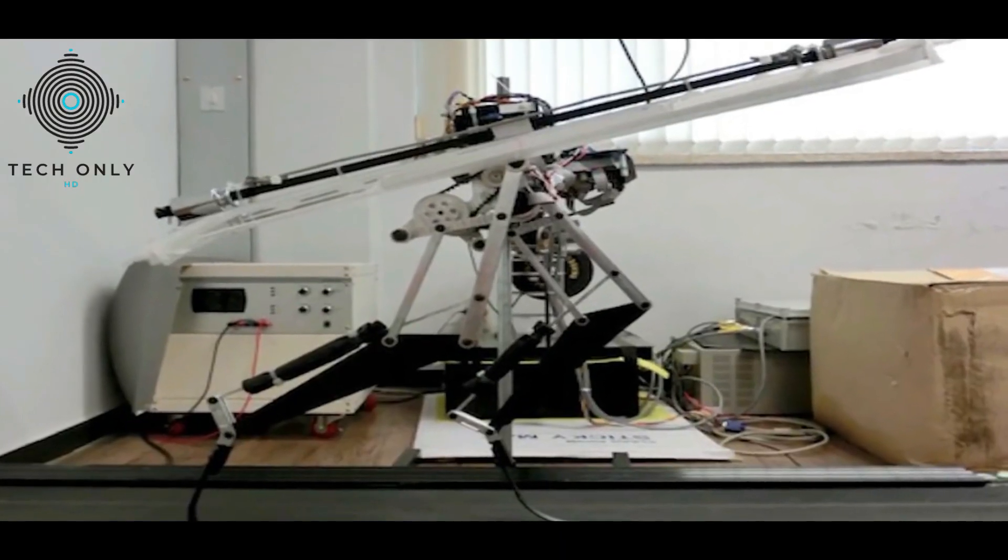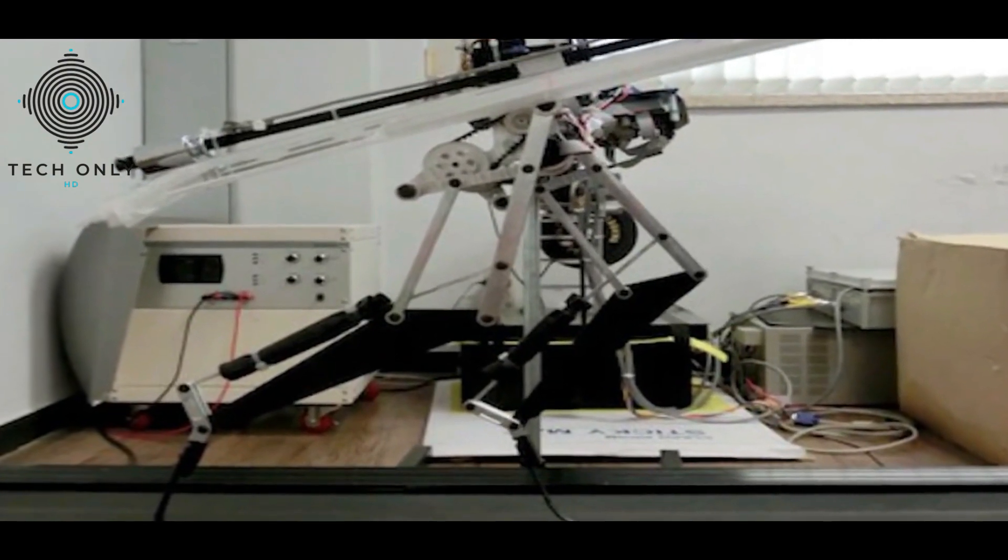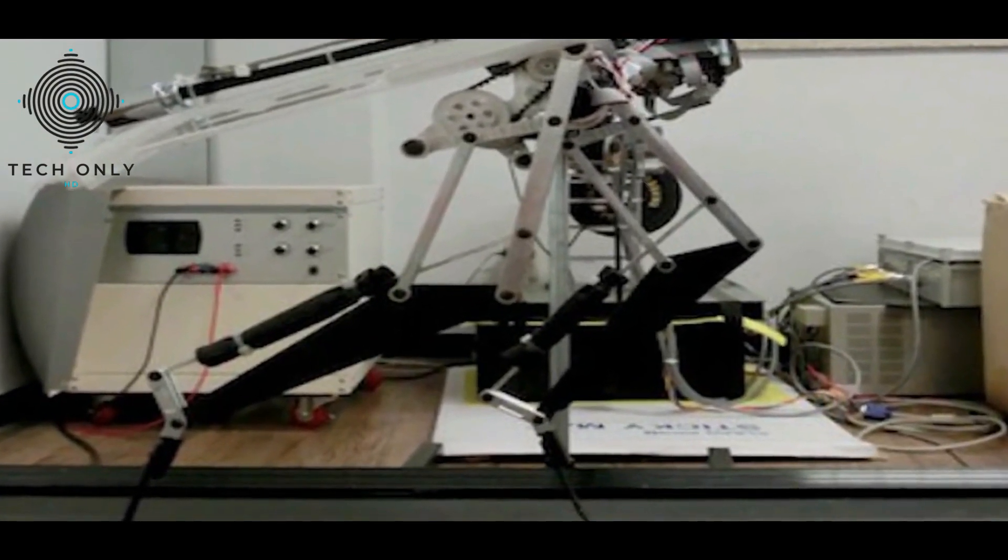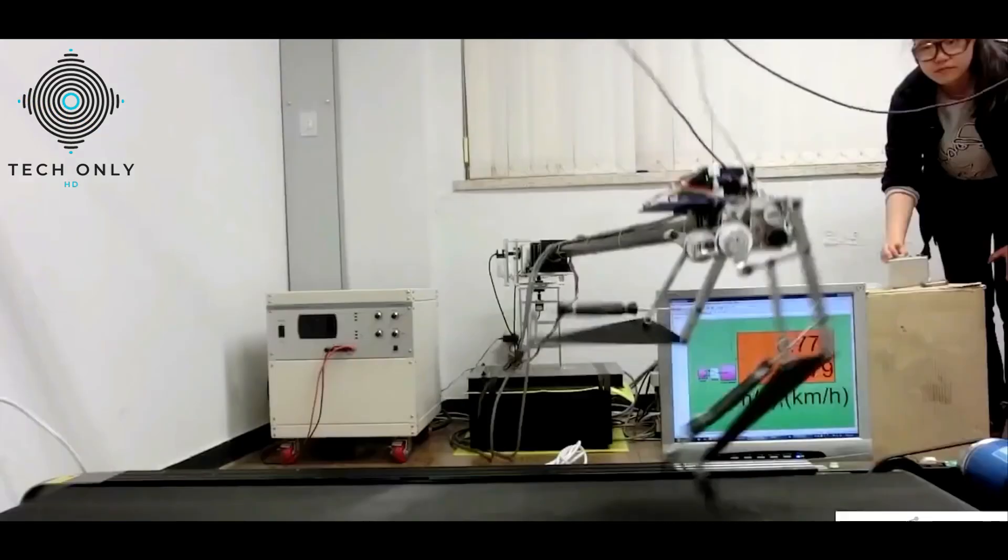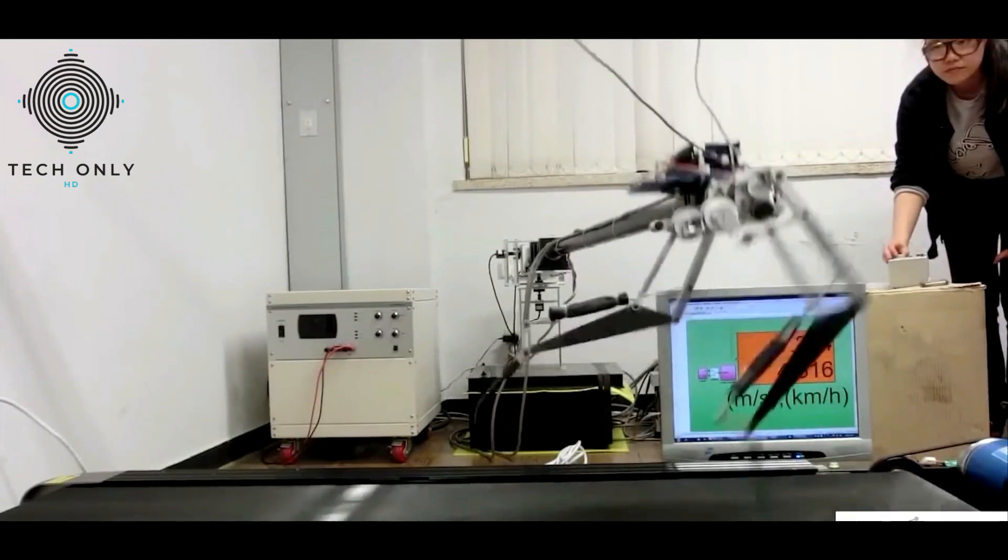The robot has two actuated legs that resemble those of the reptile. Each leg functions through the use of a single motor. The legs are also designed with an Achilles tendon-like shock-absorbing system.